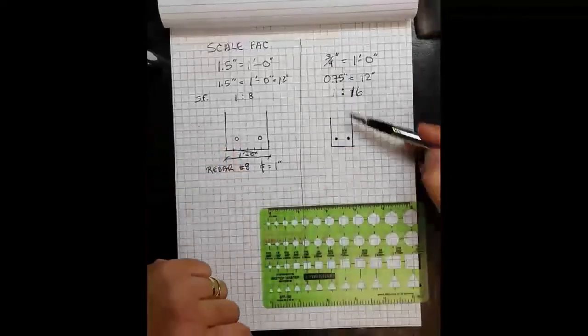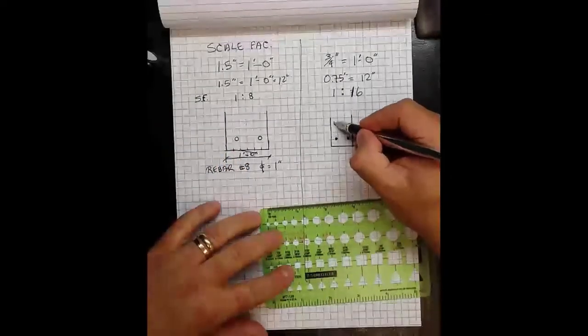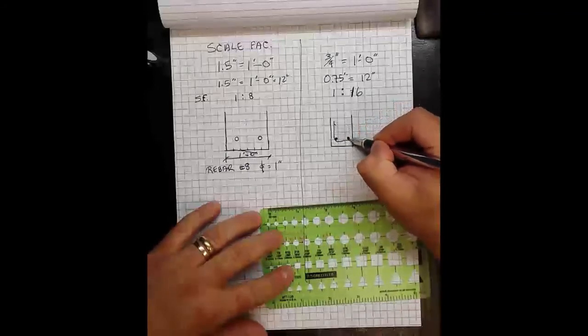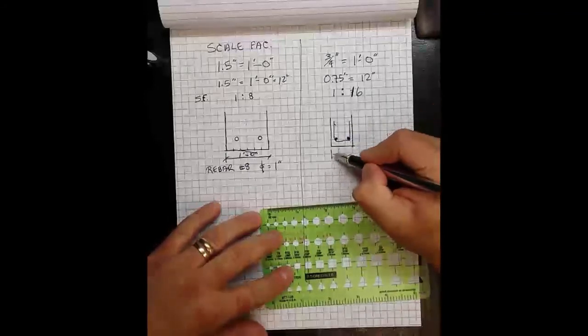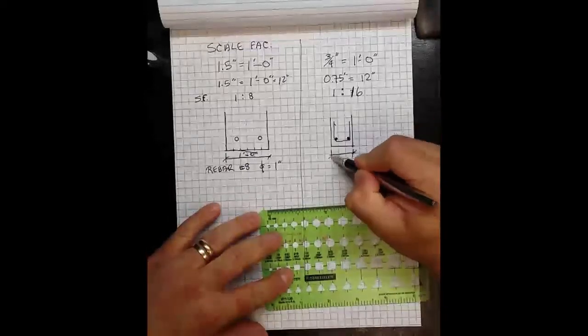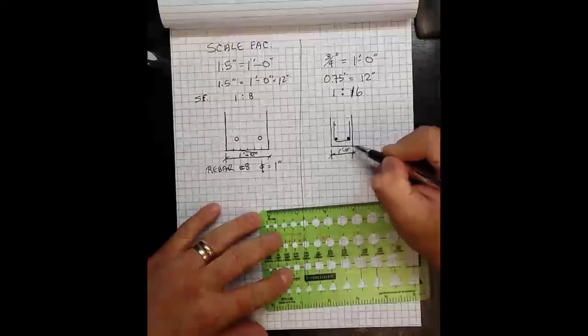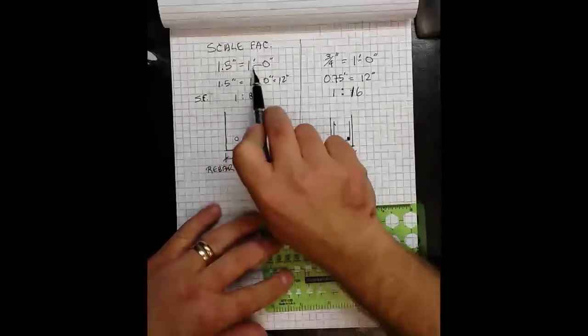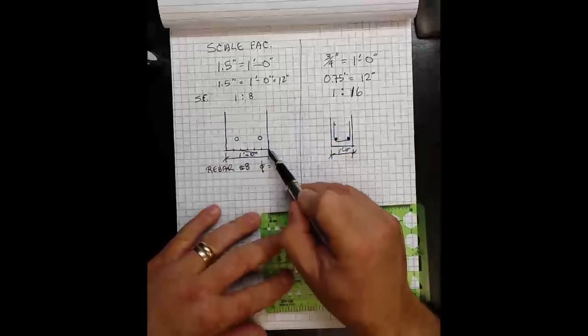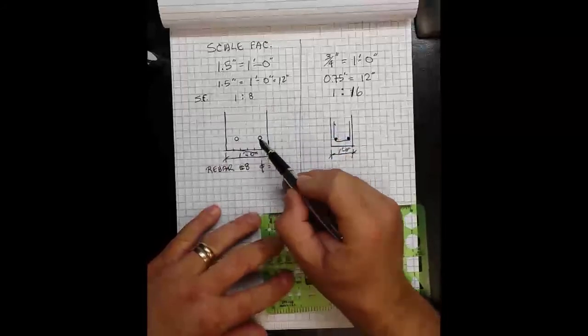You have three-quarter inch scale where you see the bottom half of a concrete beam that is one foot wide. And here you have an inch and a half scale, the concrete beam one foot wide with two number eights in the bottom.